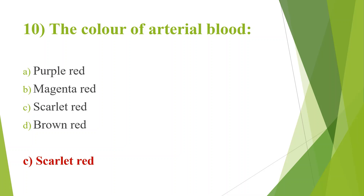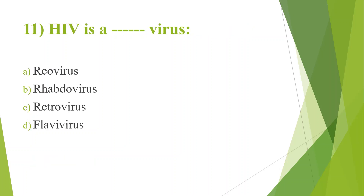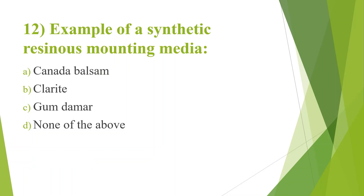11th question: HIV is a blank virus. Option A, Reovirus; Option B, Rhabdovirus; Option C, Retrovirus; Option D, Flavivirus. Answer is Option C, Retrovirus. Retroviruses are viruses with RNA as genetic material. HIV — human immunodeficiency virus — is an example of a retrovirus.